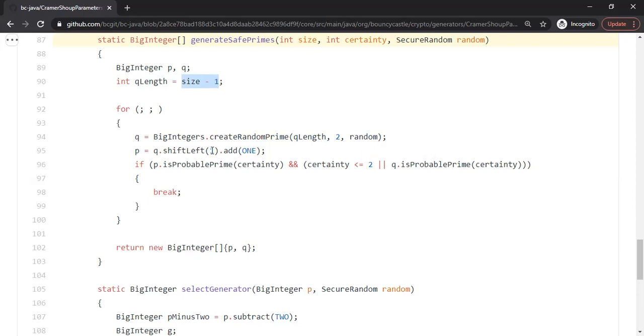And then they do shift by one position to the left. When you do shift left by one position, you are essentially multiplying the number by 2. So this part is 2 times q. And you're adding 1 to it. So then you get p equal to 2q plus 1. And then they go and check whether p is prime.